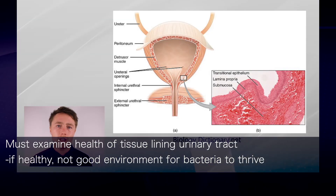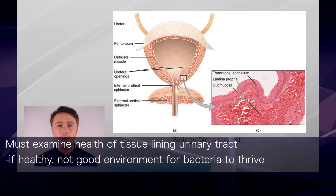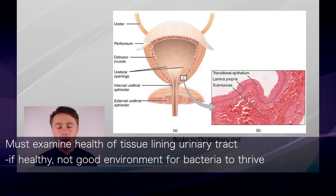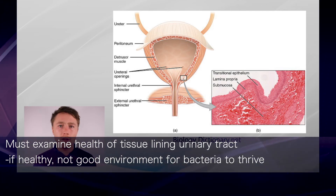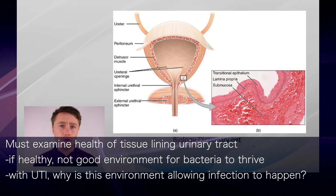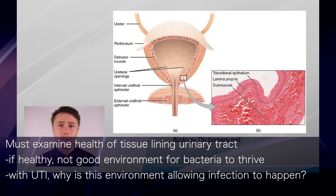In the context of chronic urinary tract infections, I believe it's of critical importance to examine the health of the tissue which lines the urinary tract. If the tissue is healthy, it's probably not going to be a very hospitable environment for bacteria to thrive in. So if there is a chronic urinary tract infection, we need to be looking at why the environment is allowing that to happen.